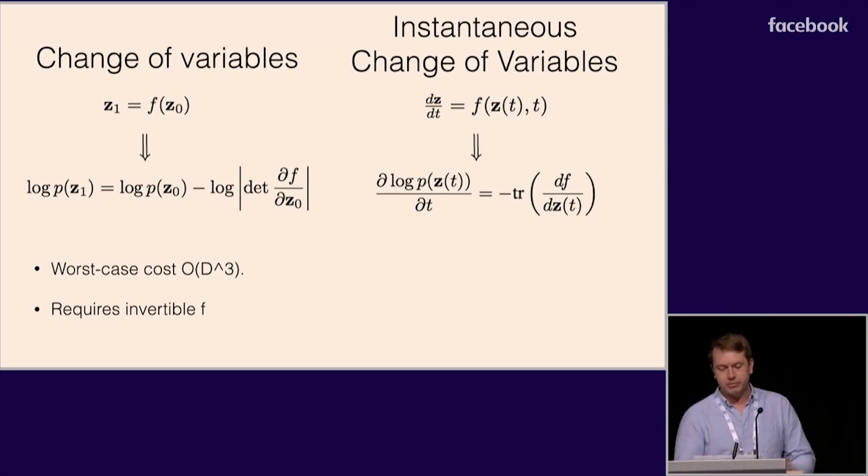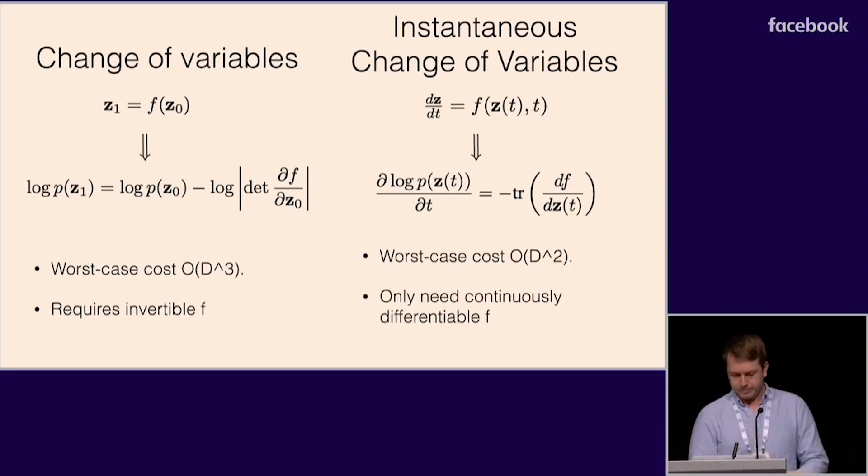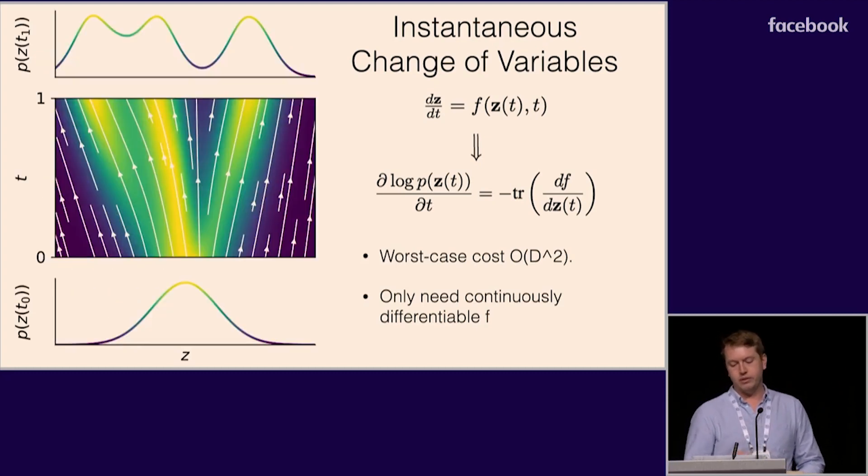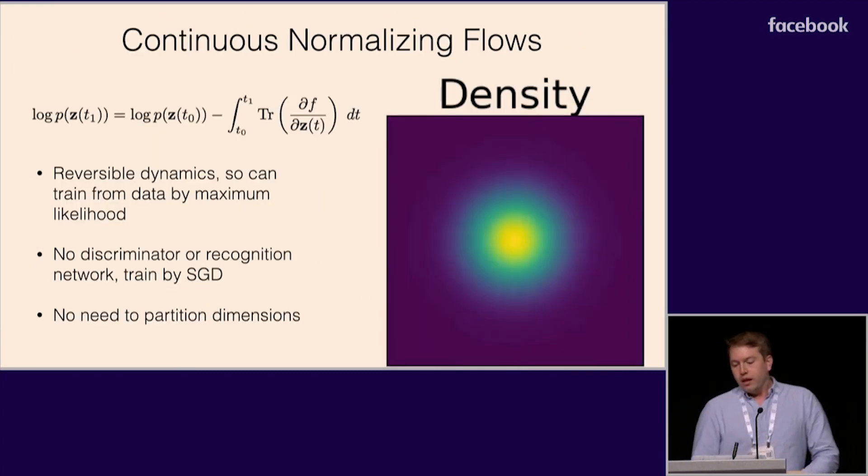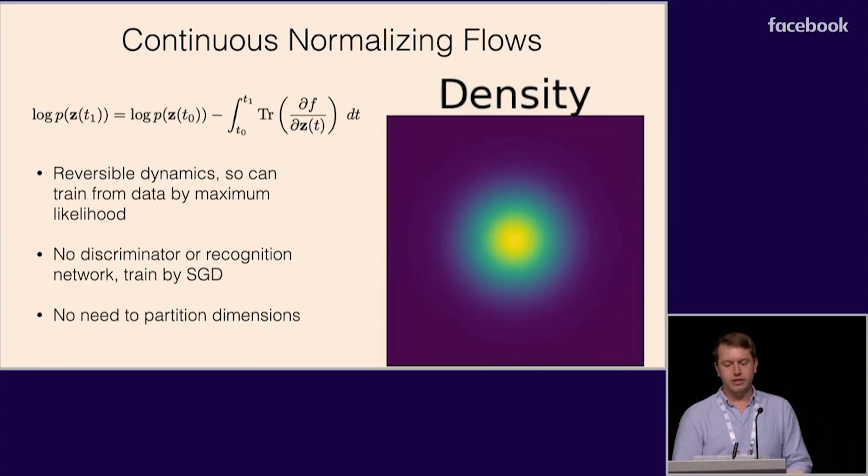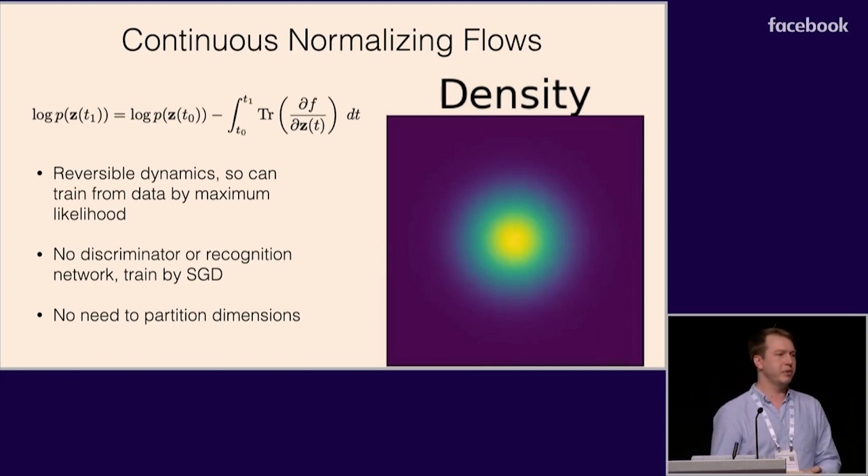Trace is a much cheaper operation than the determinant, and this formula doesn't require that our neural network is invertible. We used this theorem to build a new class of generative density models, continuous normalizing flows, that continuously transform a simple distribution into a complex but normalized one. Continuous normalizing flows have a lot of nice properties. They give exact normalized densities, and because the dynamics are reversible, we can train them directly from data samples, unlike traditional normalizing flows. There's also no need for a recognition network or a discriminator. You can train this generative model with just plain SGD. There's also no need to restrict the network architecture or partition the dimensions.